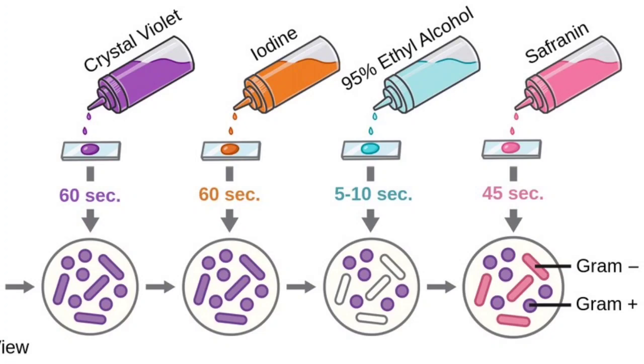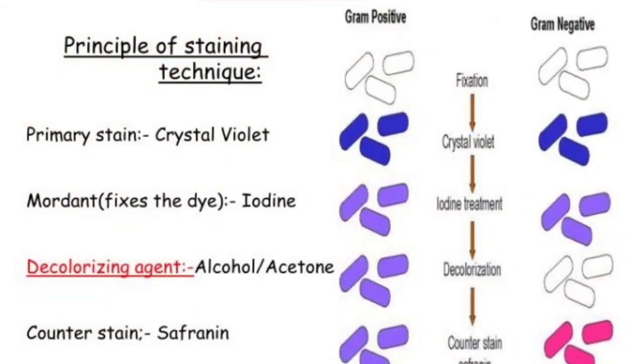Wait for 30 to 60 seconds, then wash with water. Apply Gram's iodine, which acts as a mordant that binds the crystal violet dye deeper into the cell membrane. After applying Gram's iodine, decolorize with 95% alcohol solution, which is acetone with ethanol.